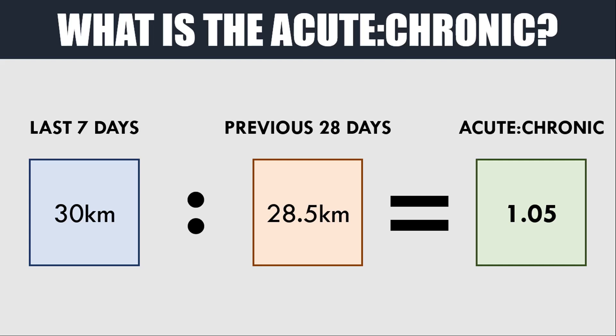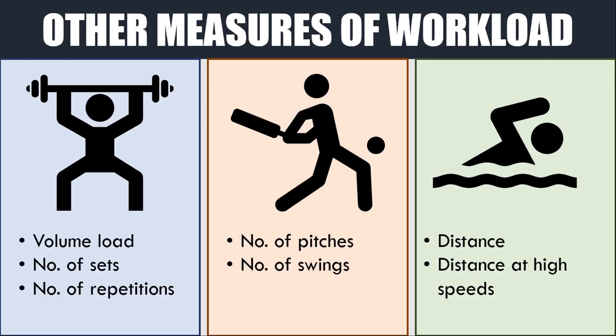In other words, the athlete did 105% of the workload in the past week compared to the average of the last four weeks — an increase of 5%. Most of the research on the acute to chronic workload ratio has been done in field sports using distance as a measure of workload.